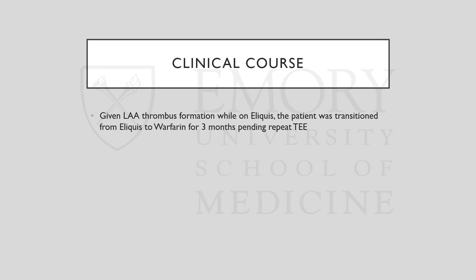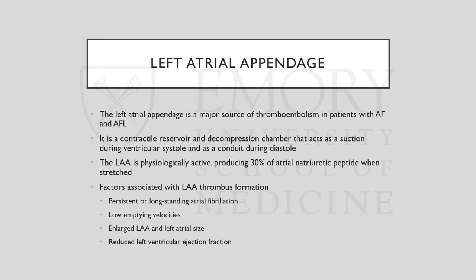The left atrial appendage is a major source of thrombus embolism in patients with AFib and atrial flutter. It's a contractile reservoir and decompression chamber, acting as a suction pump during ventricular systole and a conduit during diastole. It is physiologically active, producing 30% of atrial natriuretic peptide when stretched. Factors associated with LAA thrombus formation include persistent or long-standing atrial fibrillation, low emptying velocities, enlarged left atrial appendage and left atrial size, and reduced left ventricular ejection fraction. In the literature, the LAA accounts for about 91% of thrombus sources in non-valvular AFib and 15-38% in non-AFib patients with cardiomyopathy and stroke.